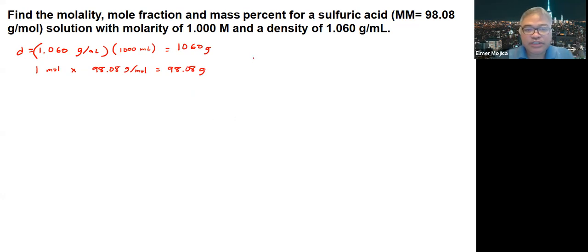So we can solve the problem already here. We could say 98.08 divided by 1,060 grams, and then multiply by 100. So this will give us around 9.25%. And then we can have 100 minus 9.25%, so that is equals to 90.75%. Or we can get 1,060 minus 98.08 divided by 1,060 times 100, and this should give you the same answer.